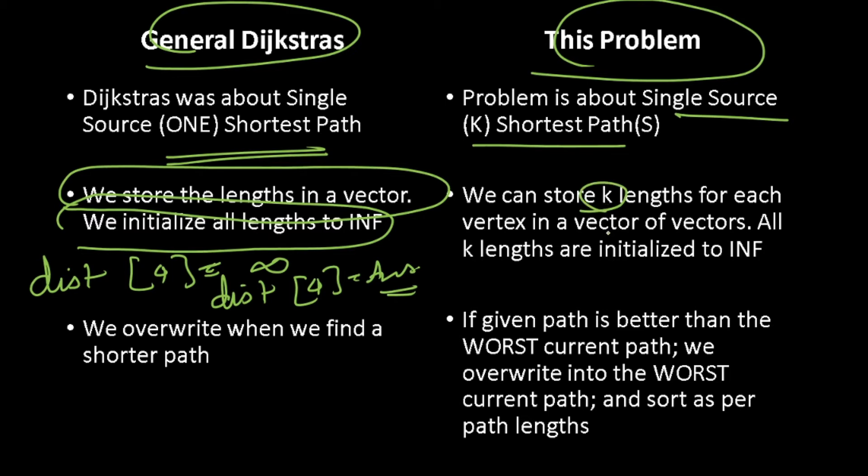Here we will be using a vector of vectors because we need k lengths and all the k lengths are initialized to infinity. What that means is, if you are asking me what is the distance to 4, I will have a vector. So, the best path is infinity.